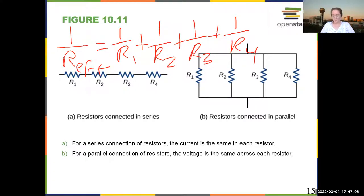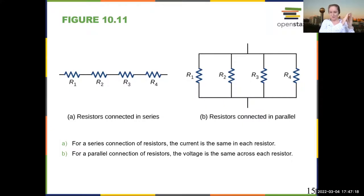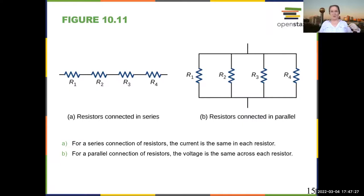This is similar to what we did with capacitors a little while ago. This is the same way that you add capacitors in series. So resistors in series are additive. Capacitors in parallel are additive. Resistors in parallel, you add the inverses. Capacitors in series, you add the inverses. So the two rules are switched.